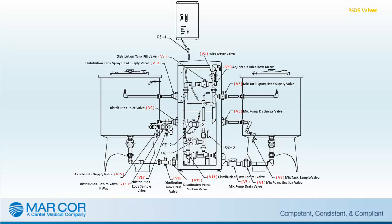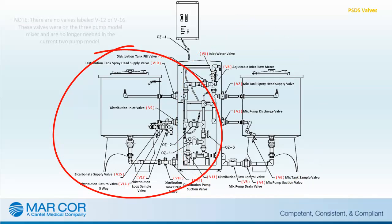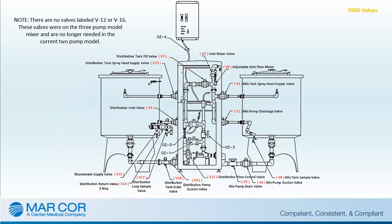Along with the tanks, pumps, and control switches, the PSDS incorporates valves that direct the flow of water, bicarb solution, and chemical disinfectant throughout the system. The valves are numbered V1 through V18, and the valves that will be opened or closed will depend on the specific procedure that is taking place. Valves 1 through 8 are primarily on the mixed tank side of the system, and valves 9 through 18 are on the distribution side of the system.